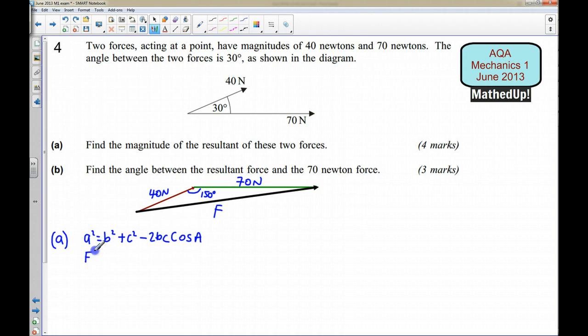So I can say that F² is going to be equal to, b and c can be either way around, so I'll say 40² + 70² - 2 × 40 × 70 × cos 150°.